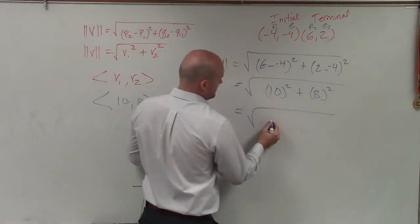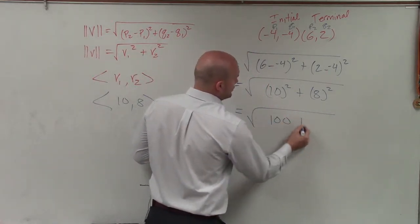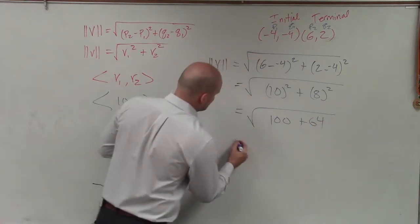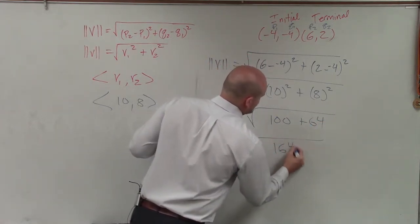But anyways, using our directed line segment, I have 100 plus 64 equals square root of 164.